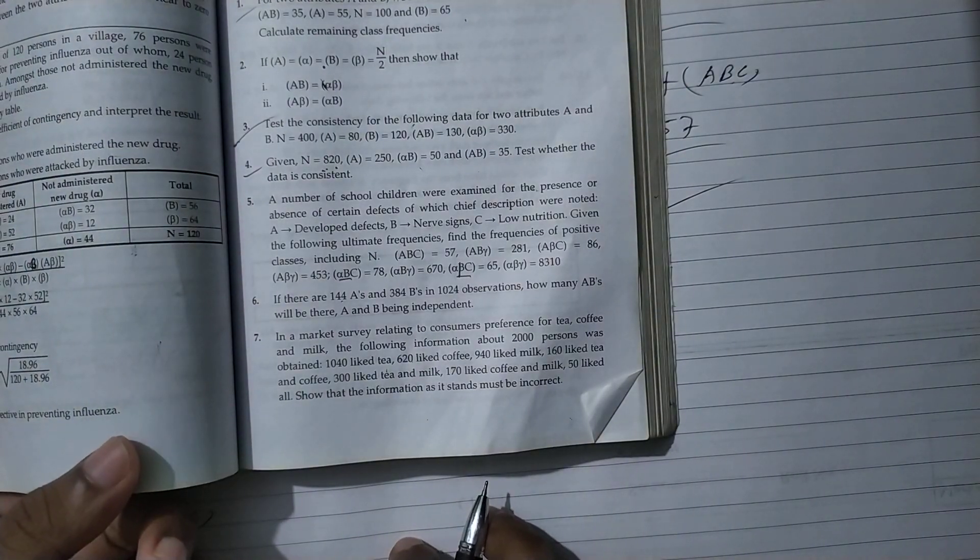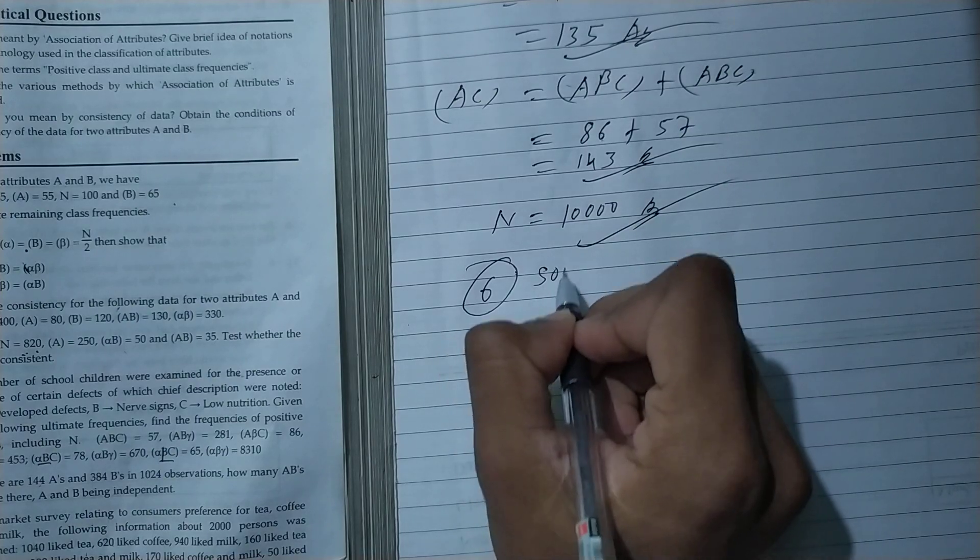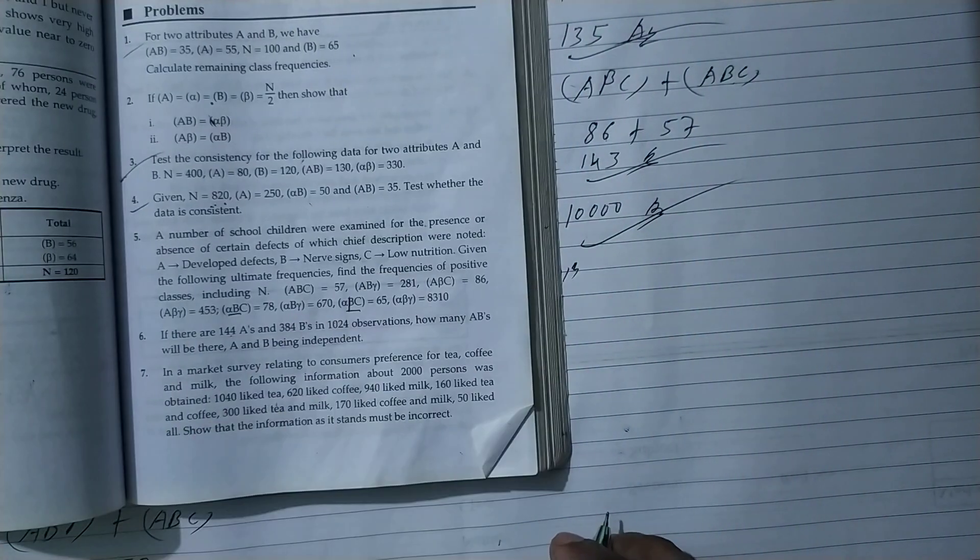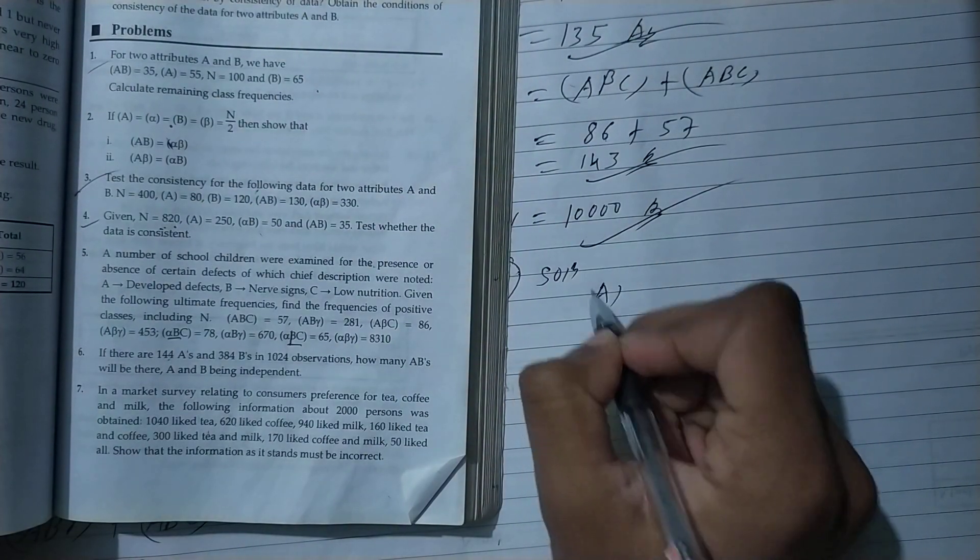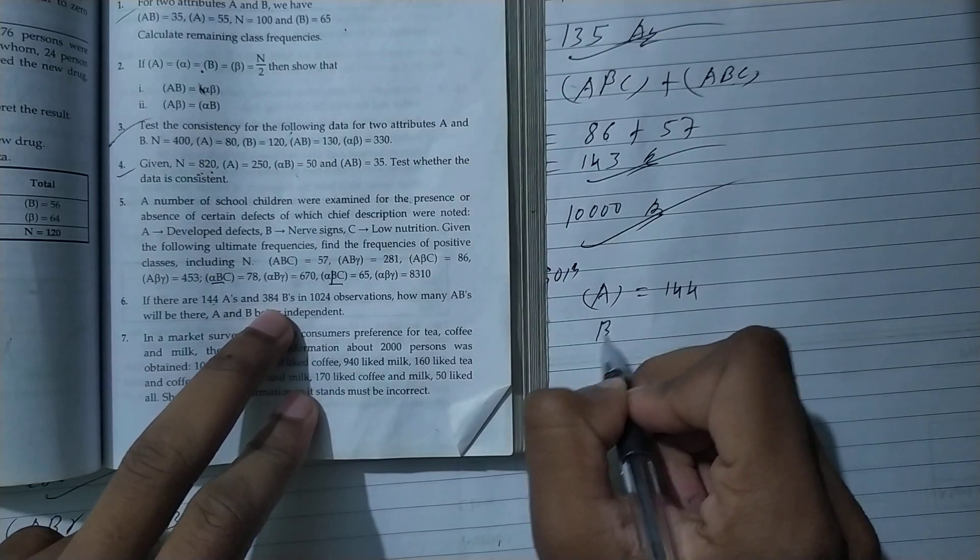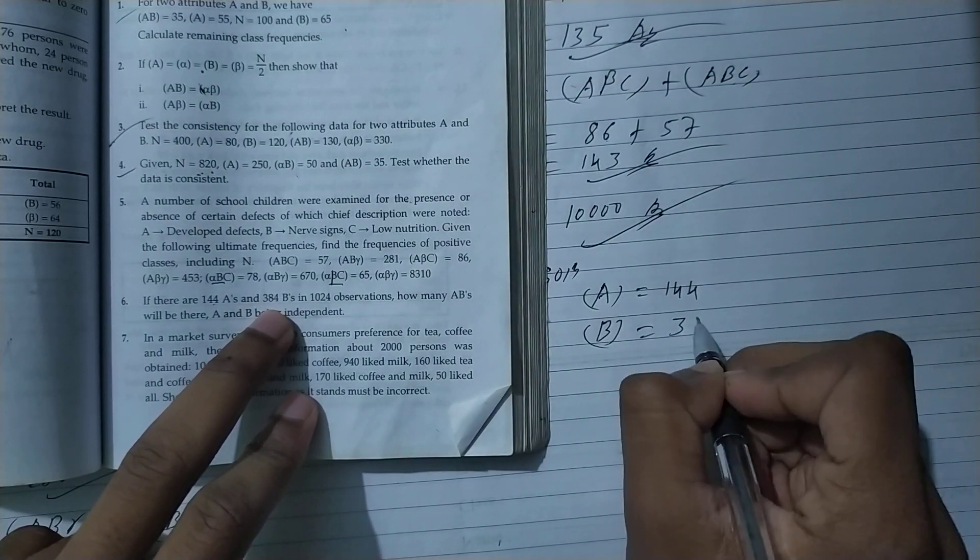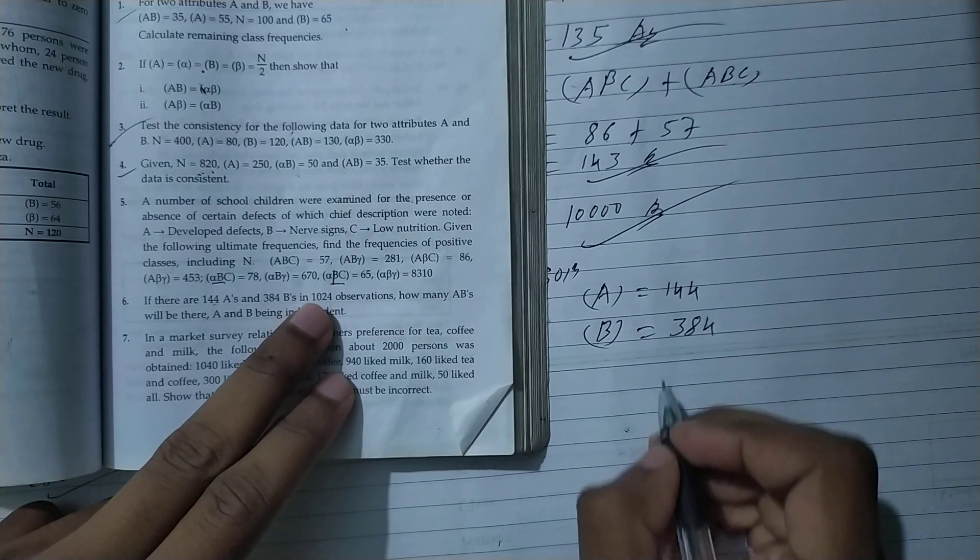So, let's start with another question, which is question number 6. If there are 144 A's, so A's 144, and B's 384, in 1024 observations.